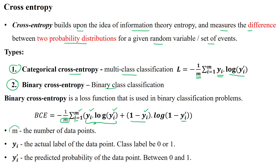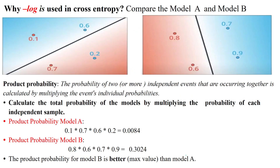Here, m is the number of data samples. Yi is the actual label, which will always be either the negative class or positive class. The predicted value will have a probability value in the range of 0 to 1.